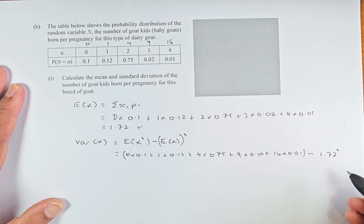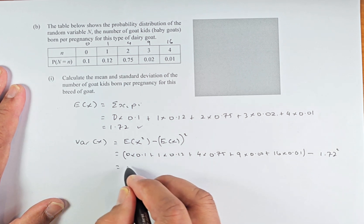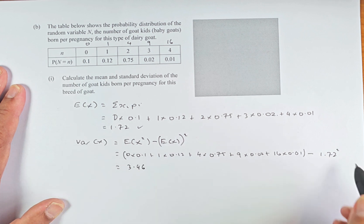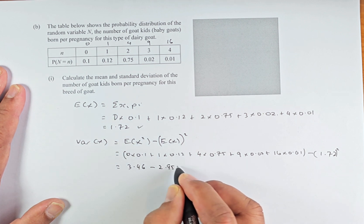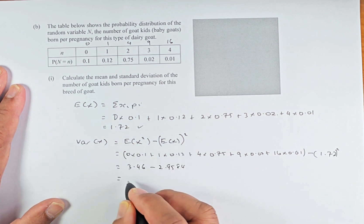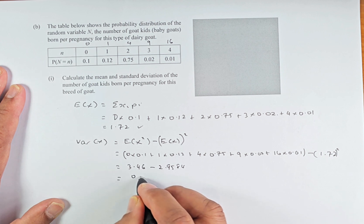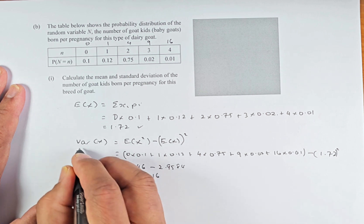Put in your calculator, it's going to be 3.46. Then you're going to subtract 1.72 squared, which is minus 2.9584 and the answer will come up to 0.5016. That is the variance.